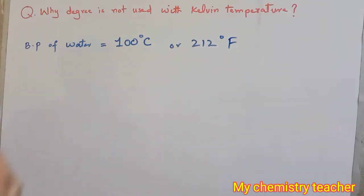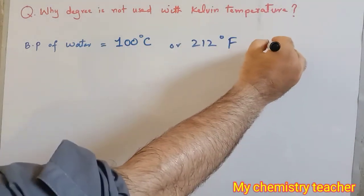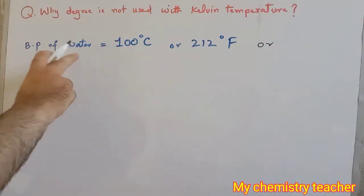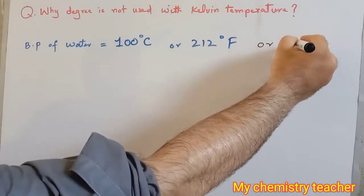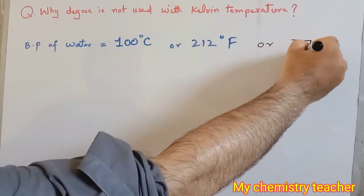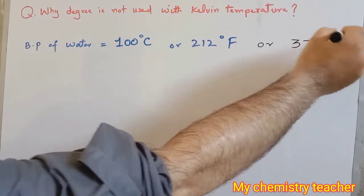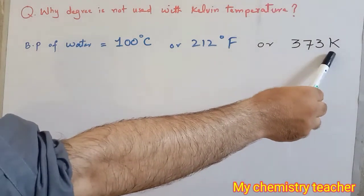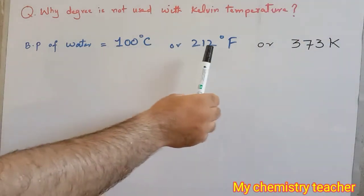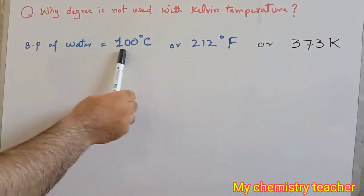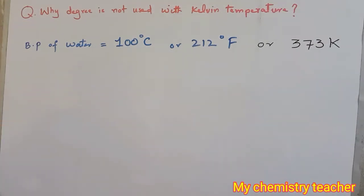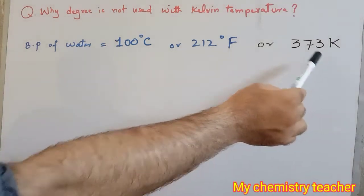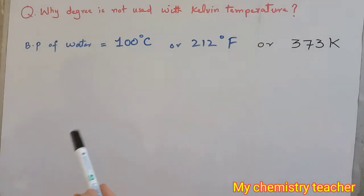If we want to represent the same boiling point of water in Kelvin temperature, we say it is 373 Kelvin. Here you saw that with Kelvin we didn't mention degree, but we did mention it with Fahrenheit and Celsius. So the basic question that arises is: why do we use degree with these two scales and why don't we use degree with Kelvin?